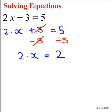Now between 2 and x, the operation involved is multiplication. So if I want to get rid of 2, I need to divide both sides of the equation by 2.